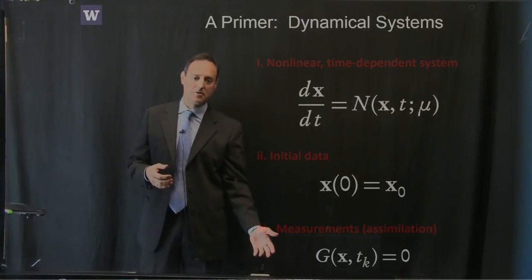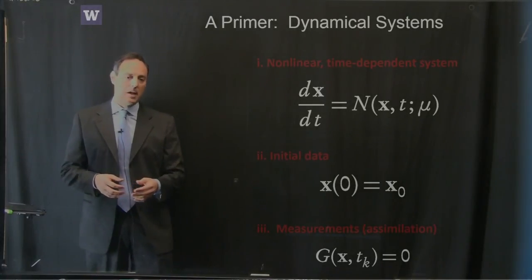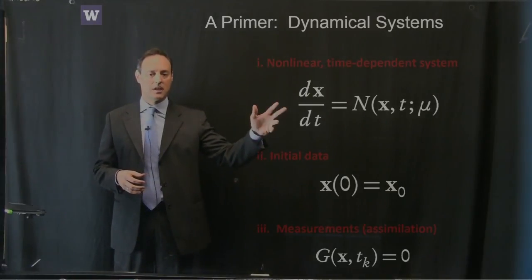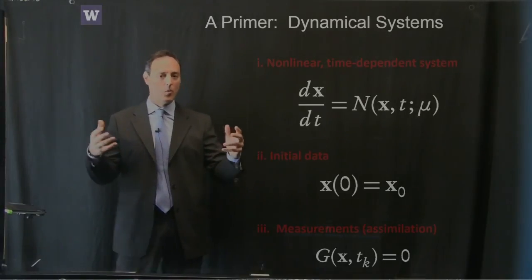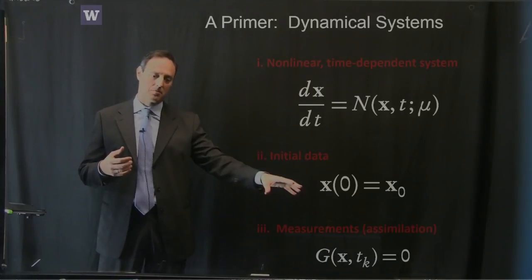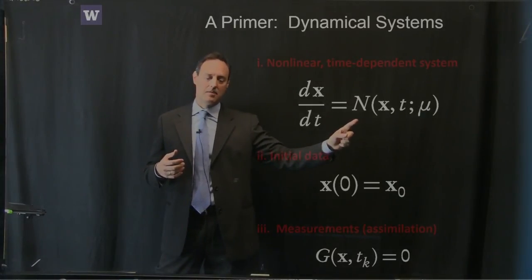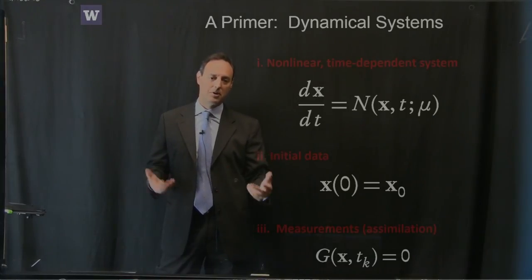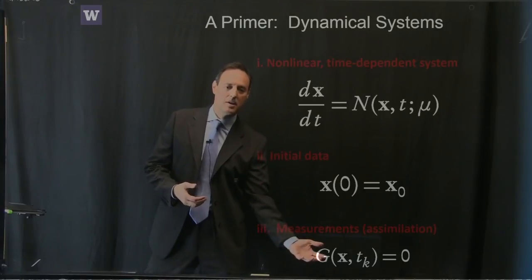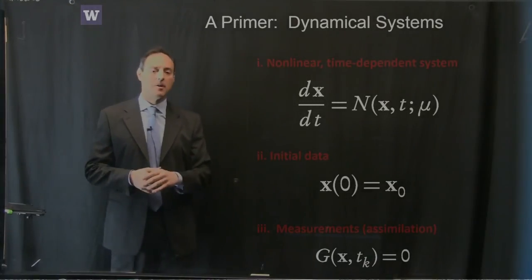So we might start the other way: we have some measurements of the system, called g, at different spatial and temporal locations. This looks like a data simulation framework — measurements, initial condition, dynamical system. Instead of starting from N and doing analysis forward, suppose I don't know N but have a lot of data measurements. Can I go from g and measurements and some initial state and infer the correct N from the dynamical measurements themselves?